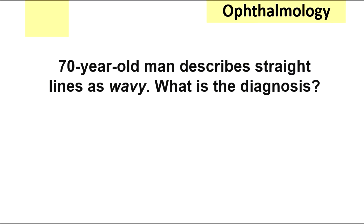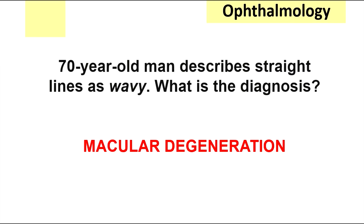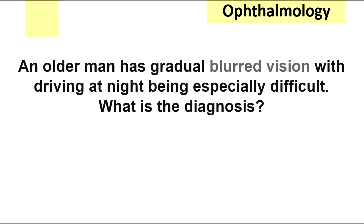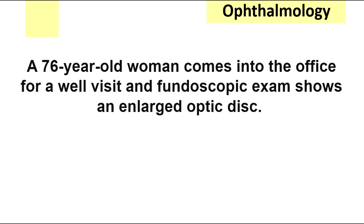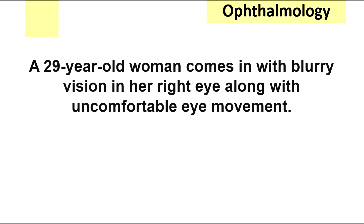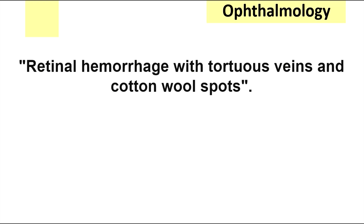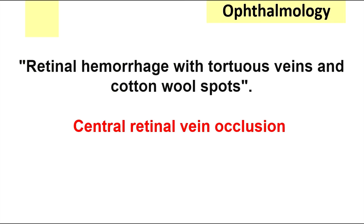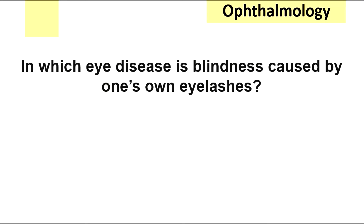Time for questions. A 70-year-old man describes straight lines as wavy — that's macular degeneration, because they can't discern edges. An older man has gradual blurred vision with driving at night especially difficult — that's cataracts, remember the Cadillac at night. A 76-year-old woman comes in for a well visit and fundoscopic exam shows an enlarged optic disc — that's open-angle glaucoma, found incidentally. A 29-year-old woman has blurry vision with uncomfortable eye movement — that's optic neuritis, associated with MS. Retinal hemorrhage with tortuous veins and cotton wool spots — that's central retinal vein occlusion. In which eye disease is blindness caused by one's own eyelashes? That's trachoma, the world's leading cause of infectious blindness. Remember to get the free slides from my website.